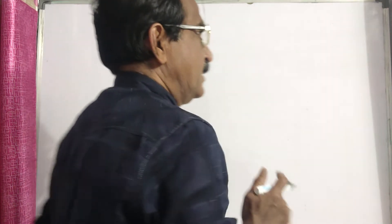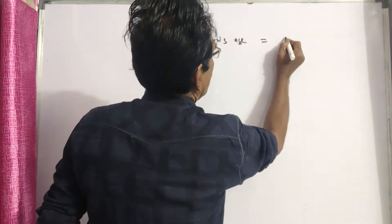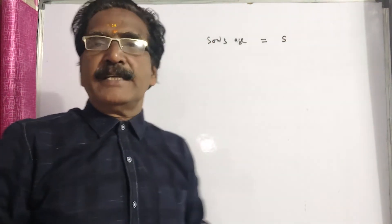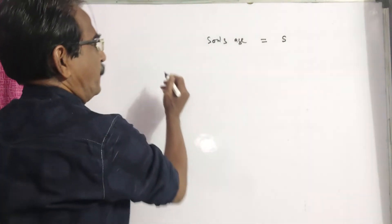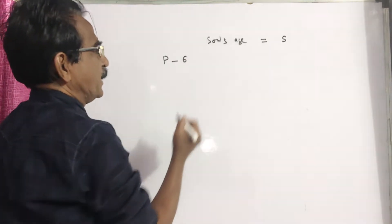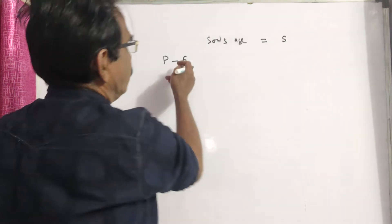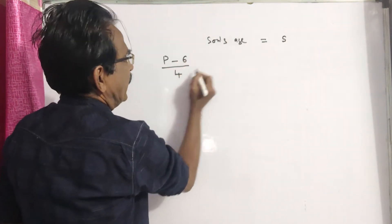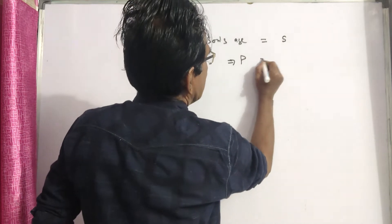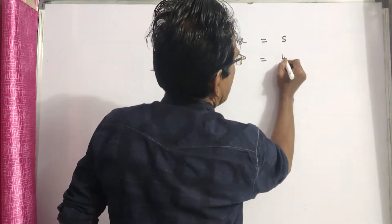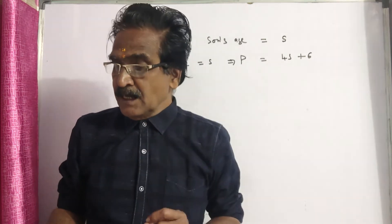Let son's age be equal to s. Six years are subtracted from the present age of Panas, and we take 25% of that — 25% means 1 by 4. Then we get the age of his son. This implies Panas is equal to 4s plus 6. This is the age of Panas in terms of s.